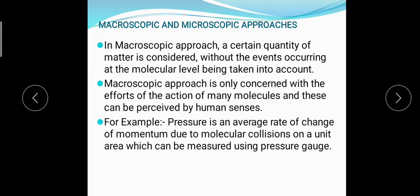Now we will be dealing with two different approaches: macroscopic and microscopic. The macroscopic approach deals with a group or bulk of molecules that are causing an effect on the system. We are not considering the microscopic level or each individual molecule — we are working with the bulk of molecules. In the macroscopic approach, a certain quantity of matter is considered without even considering the molecular level. This approach is only concerned with the effects of the action of many molecules, and these can be perceived by the human senses.